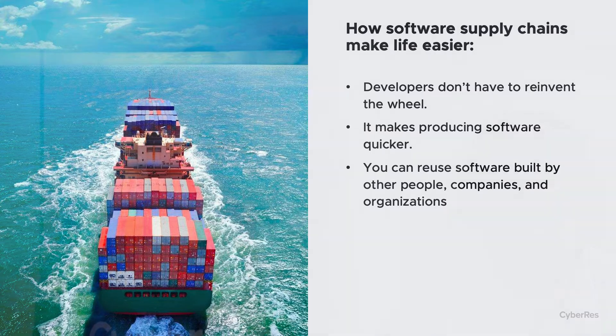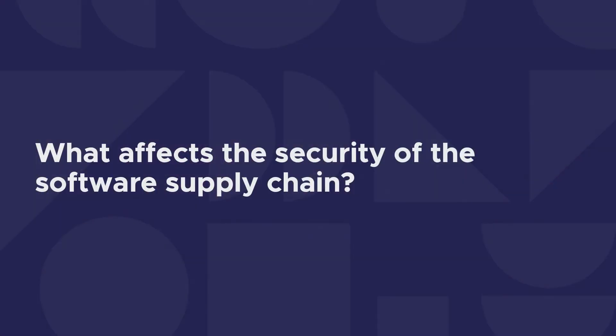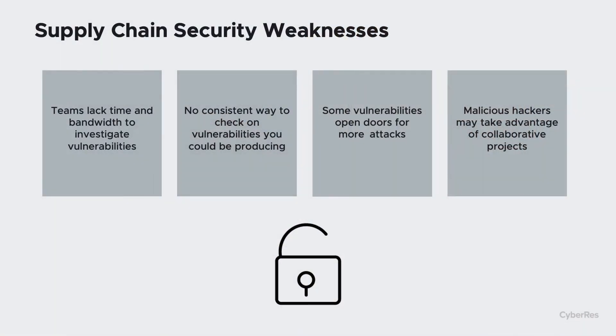Now let's talk about the security of the software supply chain. What are some aspects that may affect the security or integrity of the software supply chain? Some of those are open source projects that have many individuals — known and unknown — contributing to them. Sometimes issues can be introduced by those packages, libraries, or third-party software. Not always do the organizations building that software have the skills, knowledge, or time to investigate all the possible security issues. The main issue is when you have many individuals and no consistent way to check on the issues being produced.